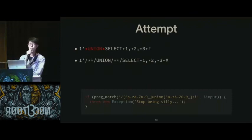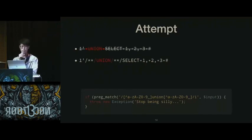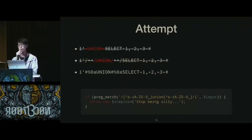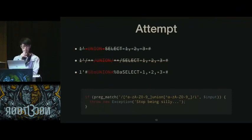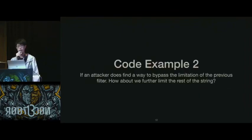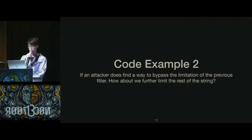Our third attempt is more complicated than before. The backtick, the pipe, and the caret are not alphanumeric characters as well, so this one will be blocked too. At the end, all three attempts were both blocked as expected. So even though we have figured out a clever way to bypass the filter, we don't have a working solution.